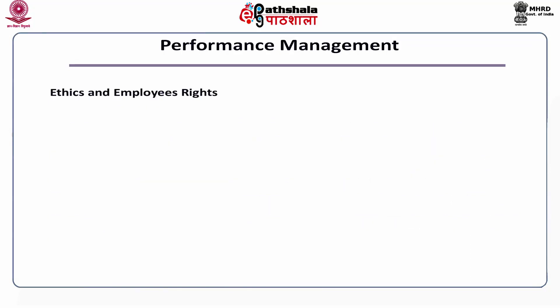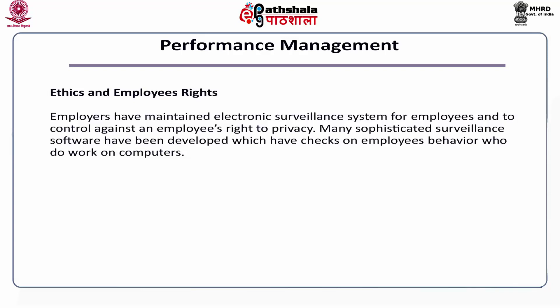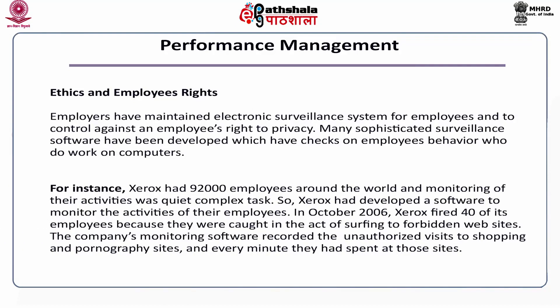Ethics and employee rights. Employers have maintained electronic surveillance systems on the employees to control against employees' right to privacy. Many sophisticated surveillance software have been developed which check the effects on the employee behavior who work on computers. For example, a firm had 92,000 employees around the world and was monitoring their activities, which was quite a complex task. So that firm developed a software to monitor the activities of the employees. In October 2006, the firm fired 40 of its employees because they were caught surfing forbidden websites. The firm's monitoring software recorded the unauthorized visits to shopping and pornography sites and every minute spent on those sites was recorded.